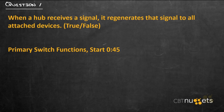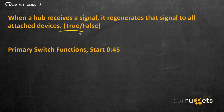Question number one: when a hub receives a signal, it regenerates that signal to all attached devices. True or false? The answer is true. That's one of the big drawbacks of a hub — it's simply a physical device that regenerates signals. When you move up to a switch, you have the ability to separate those ports into collision domains, which gives them the full bandwidth of that connection and allows multiple devices to talk at the same time.